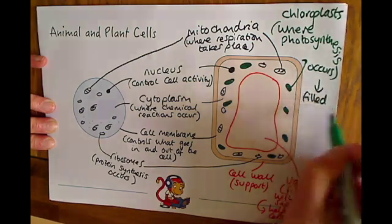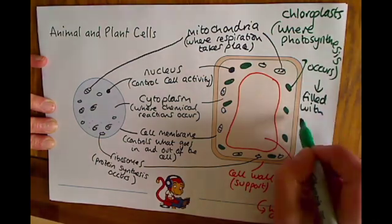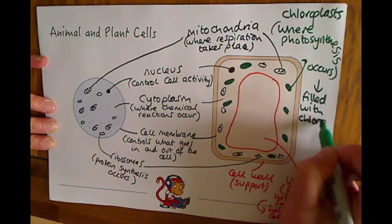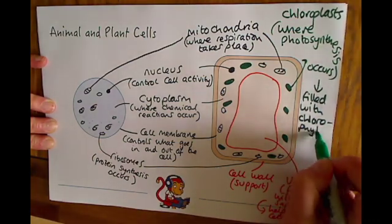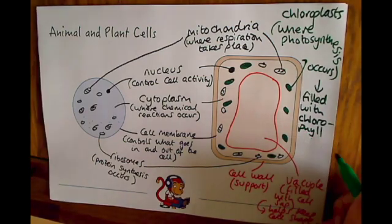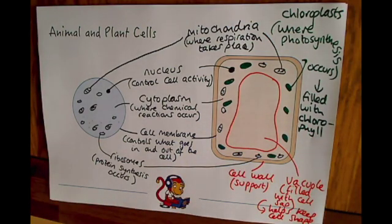And the chloroplasts themselves are filled with a green pigment called chlorophyll. That's why we draw them as green. So they're filled with chlorophyll, which is C-H-L-O-R-O-P-H-Y-L-L, all one word, chlorophyll. And this is what helps to absorb the sunlight for photosynthesis to happen.